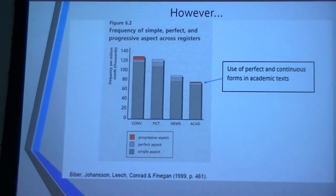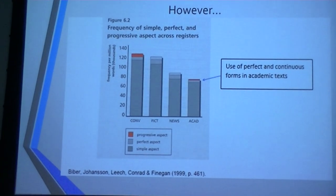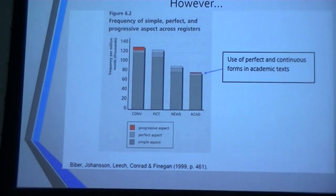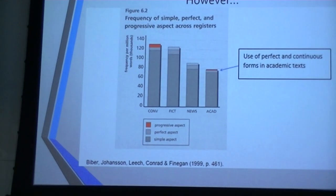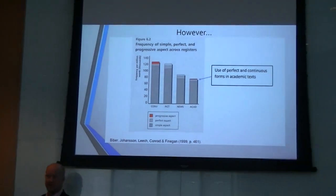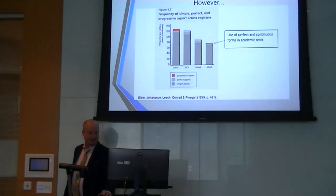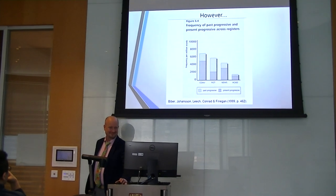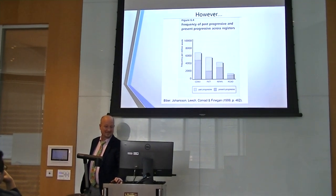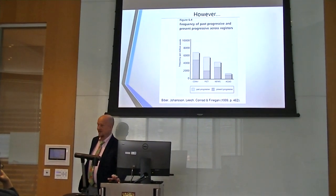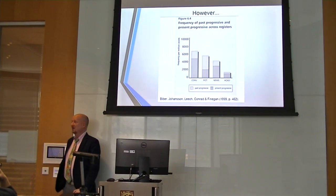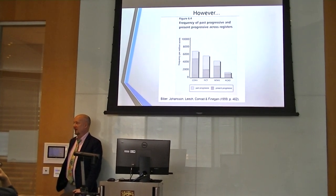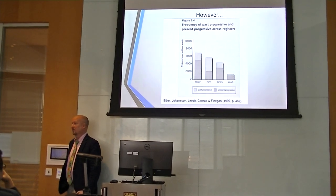The use of perfect forms is far smaller in academic writing than in conversation, fiction, or journalistic writing. And past and present continuous are much less common in academic writing than in most other registers.